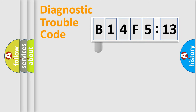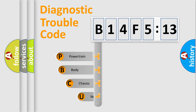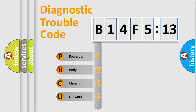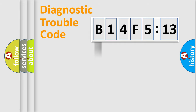First, let's look at the history of diagnostic fault code composition according to the OBD2 protocol, which is unified for all automakers since 2000. We divide the electric system of the automobile into four basic units: Powertrain, Body, Chassis, and Network.